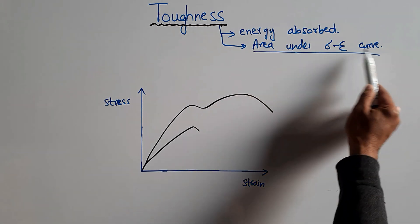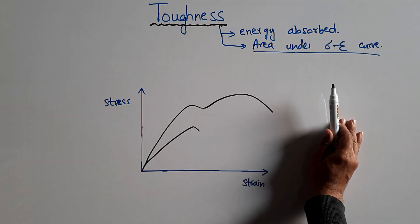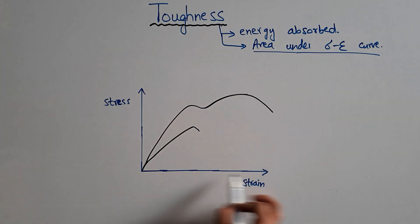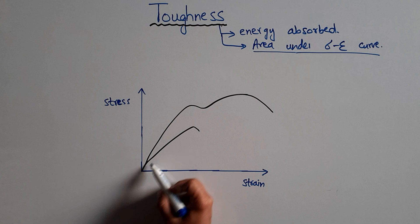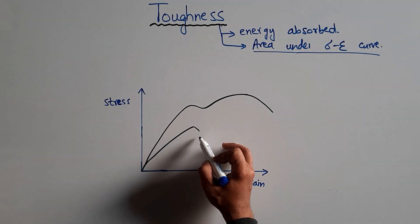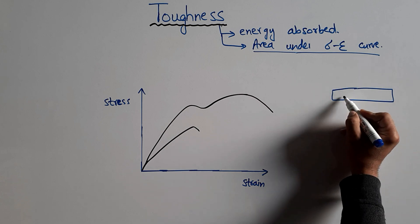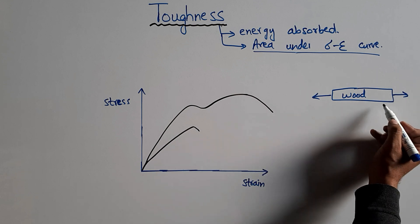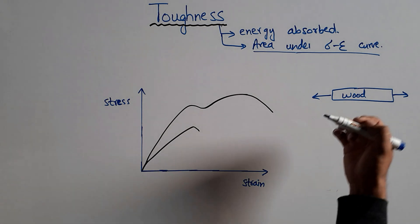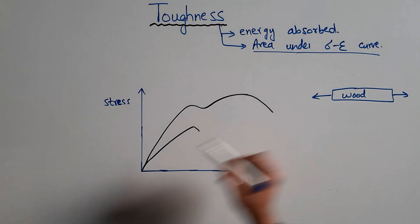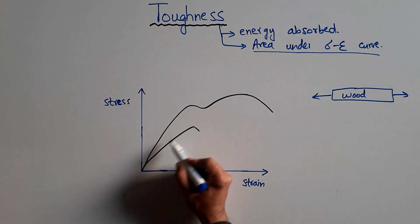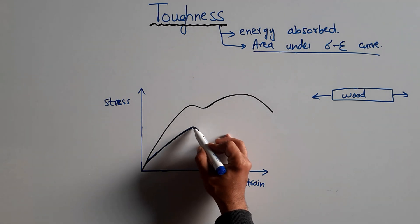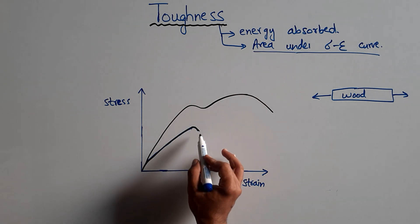The higher the area under the stress-strain curve, the tougher the material. To explain this, consider a stress-strain graph showing two materials. For the wood material, when load is applied, the wood will try to deform. As stress increases, strain also increases along the stress-strain curve for wood. Upon reaching its maximum stress, it will break and collapse.